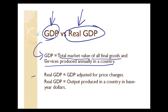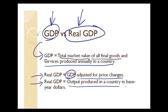Real GDP can be looked at one of two ways. We can say real GDP is simply our GDP adjusted for any price changes from one year to the next. Or we can say real GDP is the output produced in a country — all those bicycles and houses and clothes — all that output produced in a country in base year dollars.